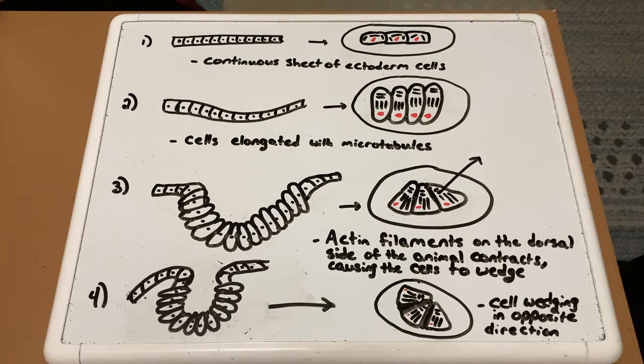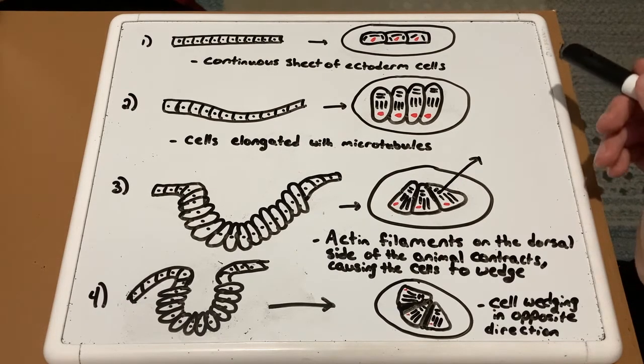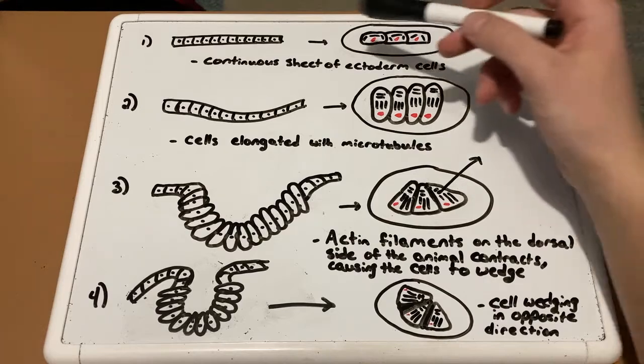Changes in the shape of a cell involve reorganization of the cytoskeleton. To show an example of this, we are going to look at the diagram here, which shows how cells in the neural plate form the neural tube. So I've seen this diagram. In the first picture, there's a continuous sheet of ectoderm cells, which again, this is a neural plate.